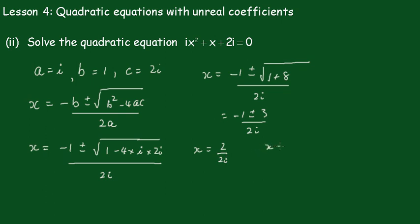So x equals minus 1 plus 3 is 2 over 2i, and x equals minus 1 minus 3 is minus 4 over 2i. Let's tidy that up: so x equals 1 over i and x equals minus 2 over i.